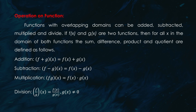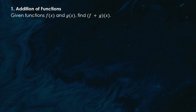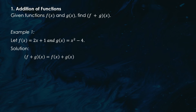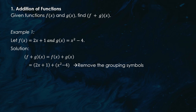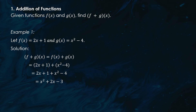Now let's get into operations we can perform on functions. Functions with overlapping domains can be added, subtracted, multiplied, and even divided. Let's start with addition. If f(x) = 2x + 1 and g(x) = x² − 4, then (f + g)(x) = 2x + 1 + x² − 4. Removing grouping symbols and combining like terms, the answer is x² + 2x − 3.